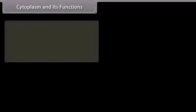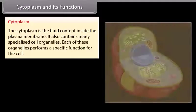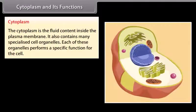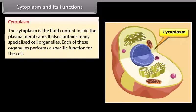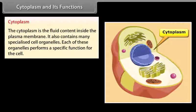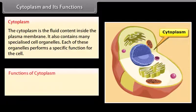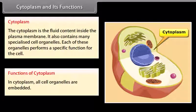Cytoplasm and its functions: the cytoplasm is the fluid content inside the plasma membrane. It also contains many specialized cell organelles, each of which performs a specific function for the cell. All cell organelles are embedded in the cytoplasm.